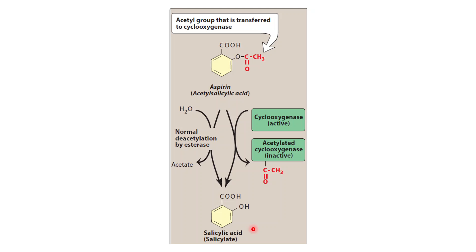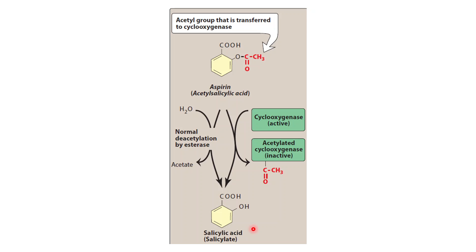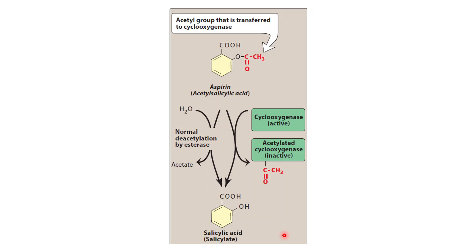That is why using other NSAIDs instead of aspirin is not recommended in patients with cardiovascular disease. Other side effects include increased production of leukotrienes, because decreased production via the cyclooxygenase pathway increases the lipoxygenase pathway, leading to leukotriene production, which can increase the risk of asthma in asthmatic patients. Also headache, tinnitus, and dizziness may occur, and hypersensitive reactions can be seen.